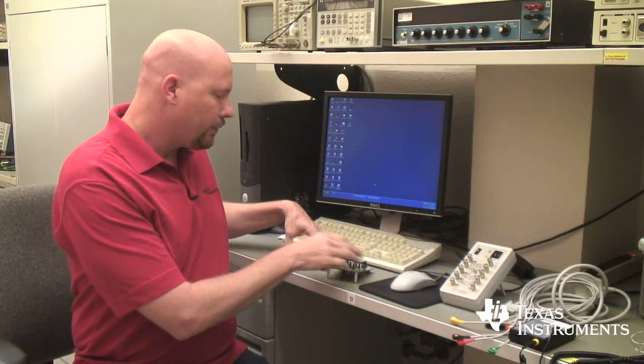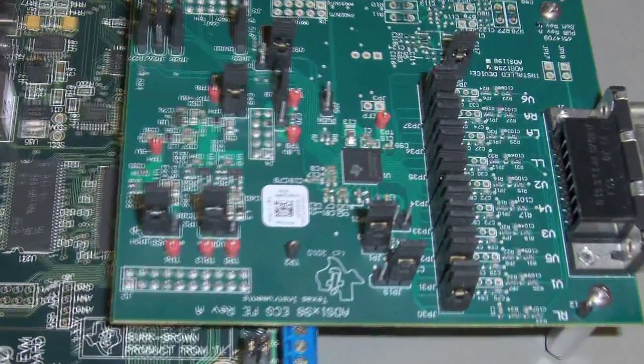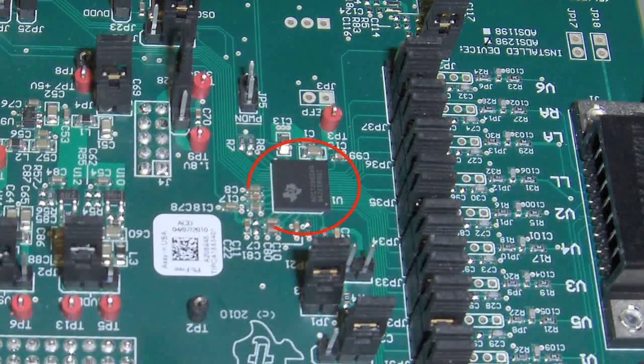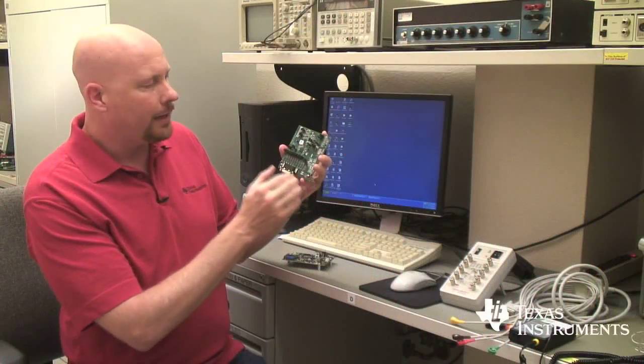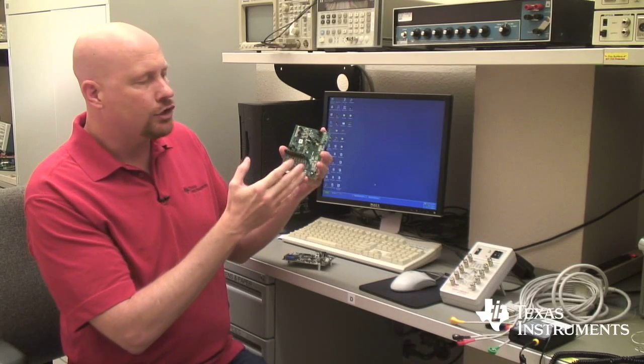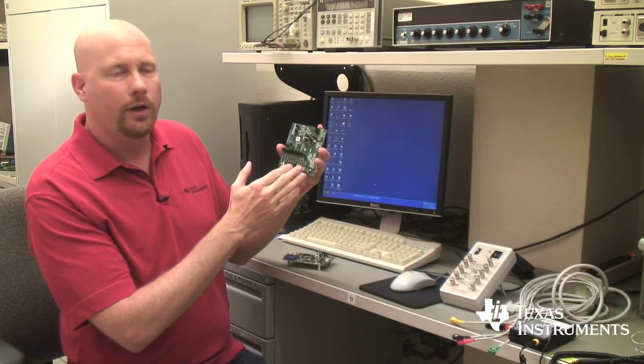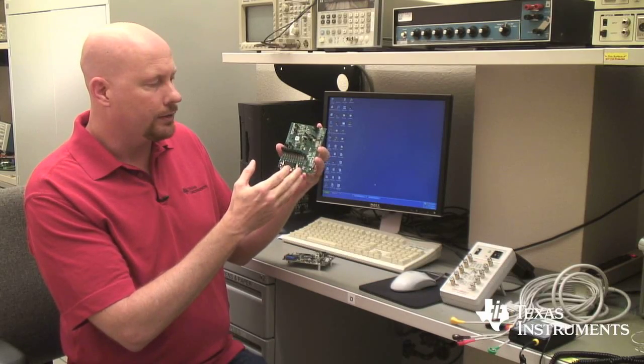Now the 1298 EVM is this board here. The 1298 is the device in the middle and you can see it's very small in an 8 millimeter by 8 millimeter package. The board has many different connections for integrating this into your system and it has jumpers to change the configuration for different supply voltages or reference voltages.